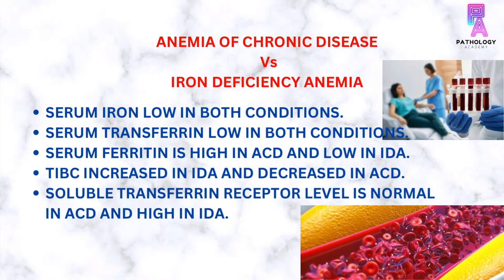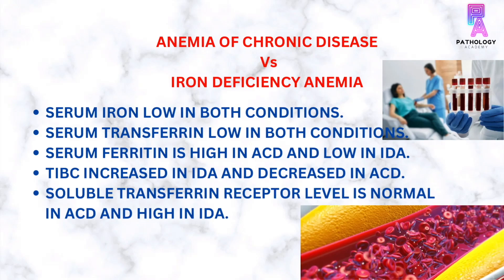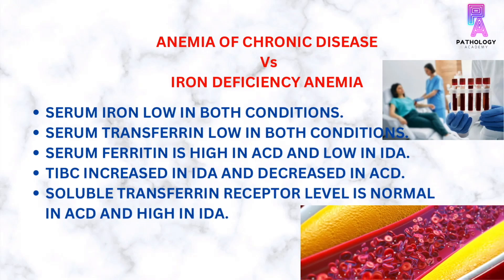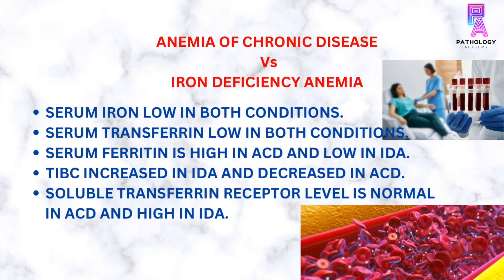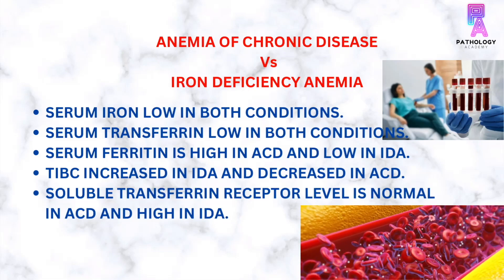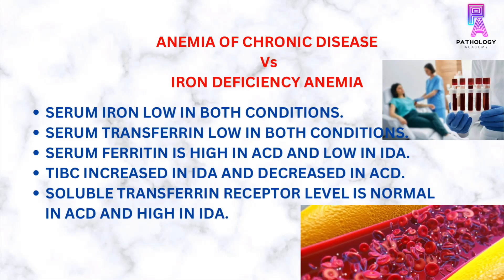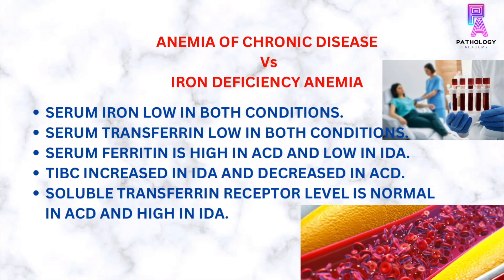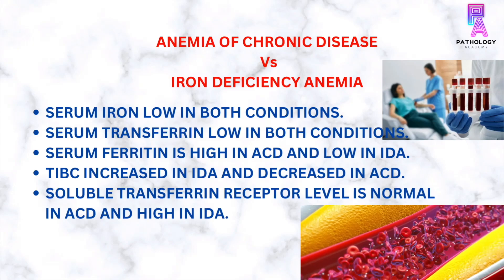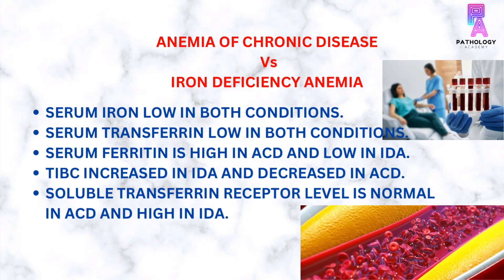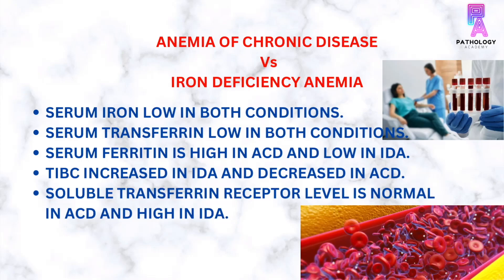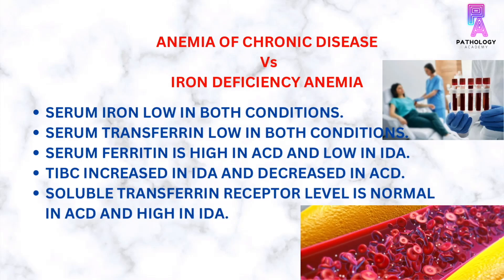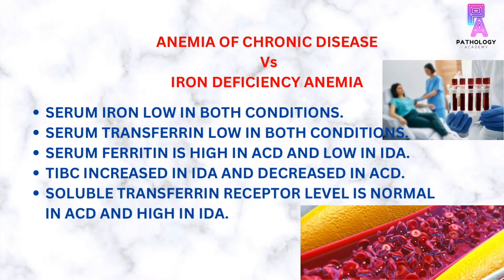In anemia due to chronic disease, there is increased hepcidin synthesis or decreased erythropoietin, and there is a low level of iron in serum. In anemia due to iron deficiency, there is deficiency of iron and serum iron levels are also low. However, there is no increase in hepcidin level and no decrease in erythropoietin levels.